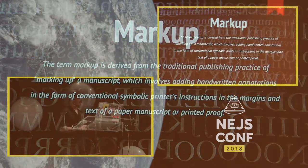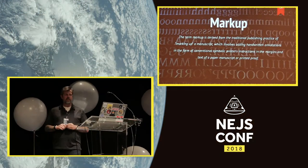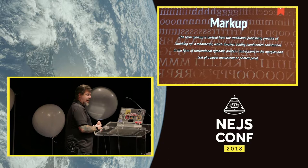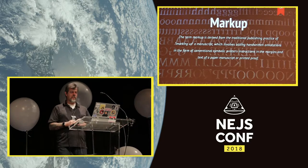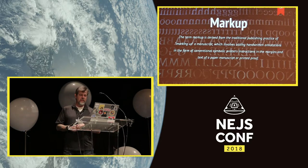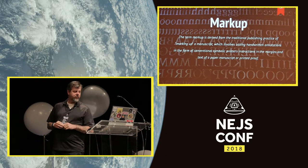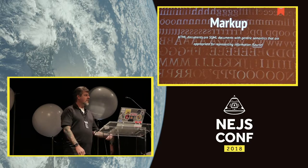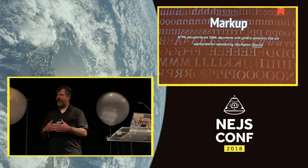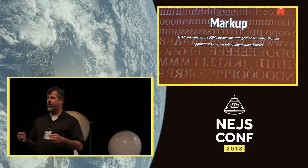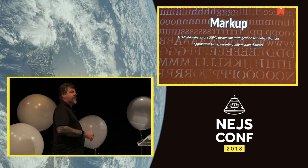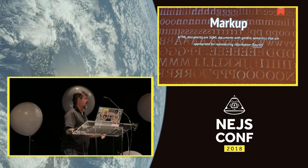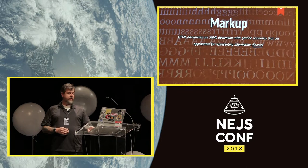Hypertext markup language — if you look at the picture in the back of this slide, it's actually a letterpress with all the letters. The term 'markup' was derived from the traditional practice of marking up a manuscript, which involves adding handwritten annotations in the form of conventional symbolic printer's instructions in the margins and text of paper, manuscript, or printed proof. The letterpress dates back to the 13th century. HTML documents are SGML documents with generic semantics. One of the powers of the web was the fact that HTML was so easy — Tim Berners-Lee created HTML as just a subset of SGML with basic instructions.